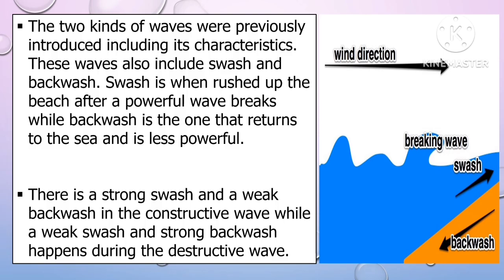The two kinds of waves were previously introduced including their characteristics. These waves also include the swash and backwash. Swash is the rush up to the beach after a powerful wave breaks, while the backwash is the one that returns to the sea and is less powerful. There is a strong swash and a weak backwash in constructive waves, while a weak swash and a strong backwash happens during destructive waves.